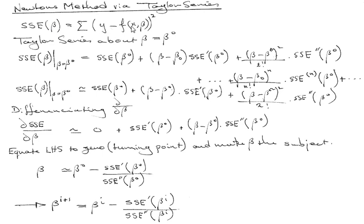Sigma, y minus f of x, beta, all squared. So we've got sum of squares there. We can take a Taylor series expansion of this equation about some point, beta equals beta 0.